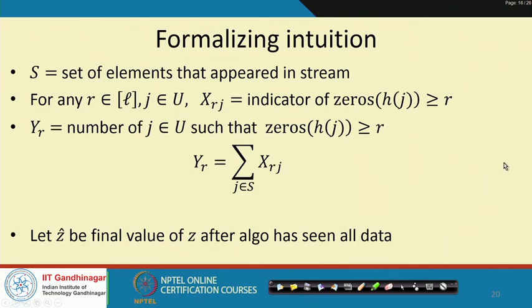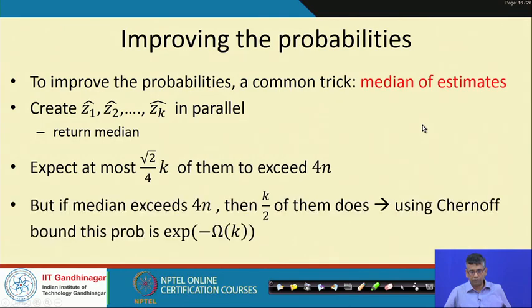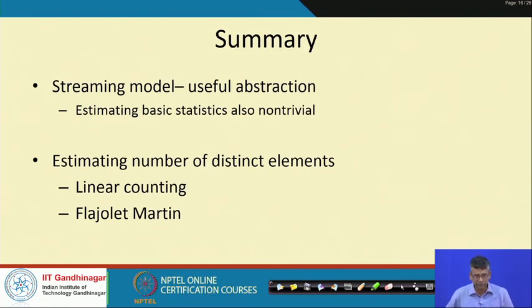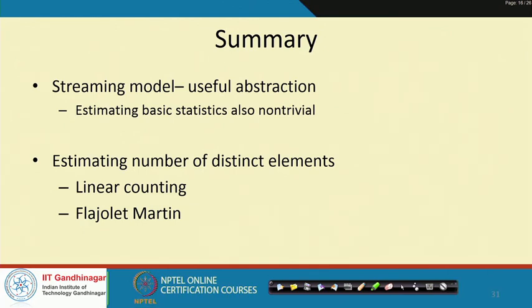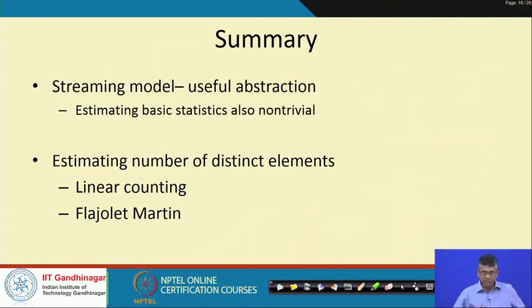Let us end now — in the next class we will formalize the proof of the Flajolet-Martin algorithm. To summarize: in this class we introduced the streaming model as a useful abstraction for when you cannot store the entire data set into memory. We got to the question of estimating basic statistics such as the number of distinct counts, and saw that even that is fairly non-trivial — simple sampling-based algorithms do not work. We saw one algorithm that does work, linear counting, which however uses order n space. And we saw the Flajolet-Martin algorithm, a magic-like algorithm for which we have gotten the intuition but not yet the actual proof — that is what we will do in the next class. Thank you.